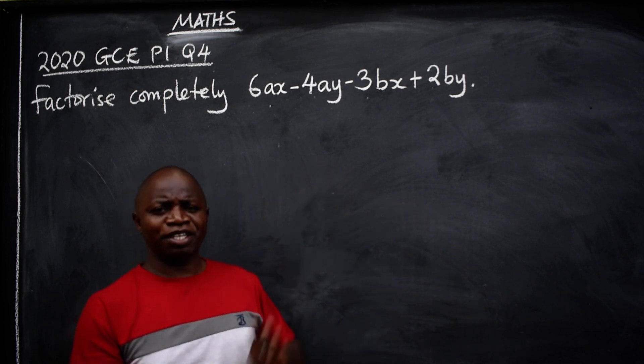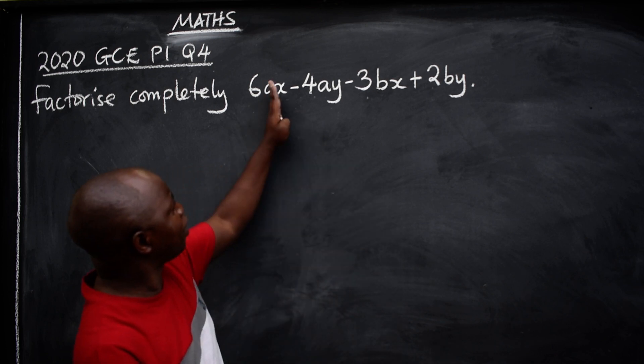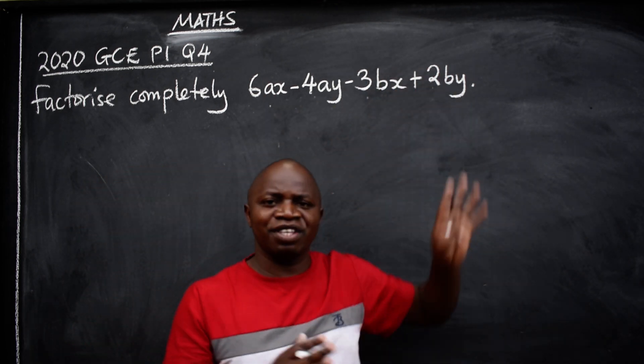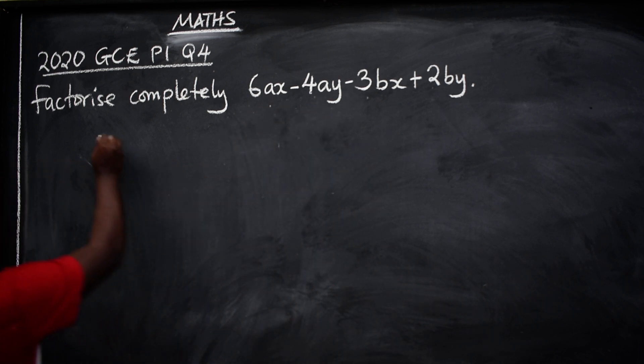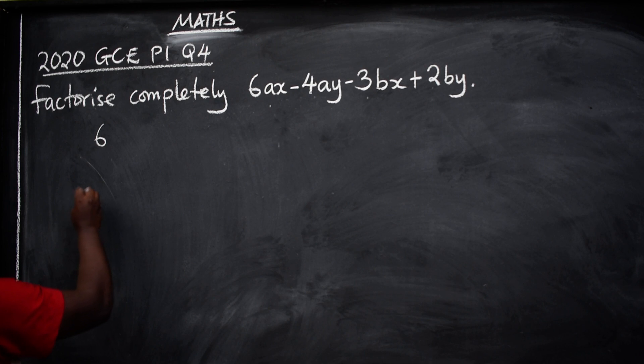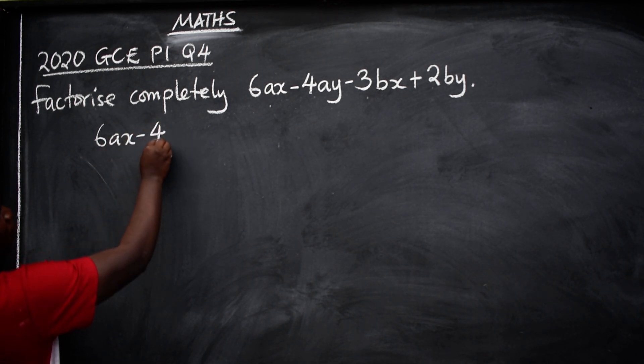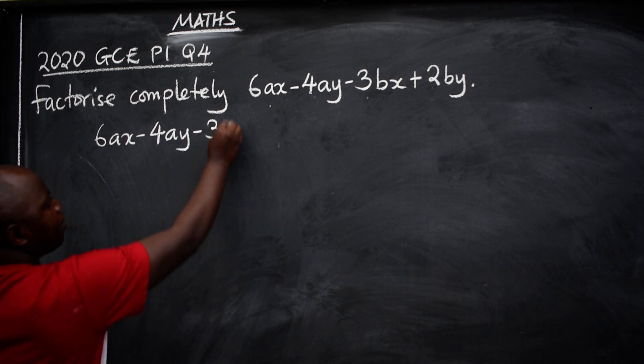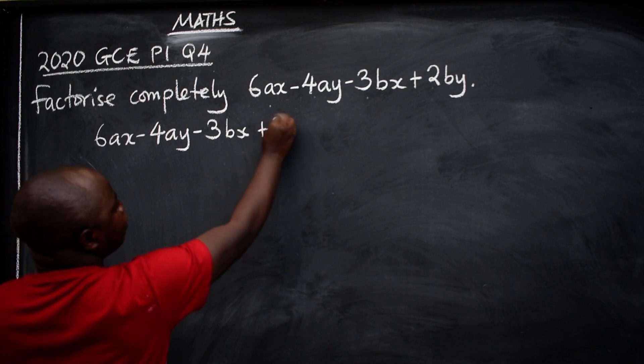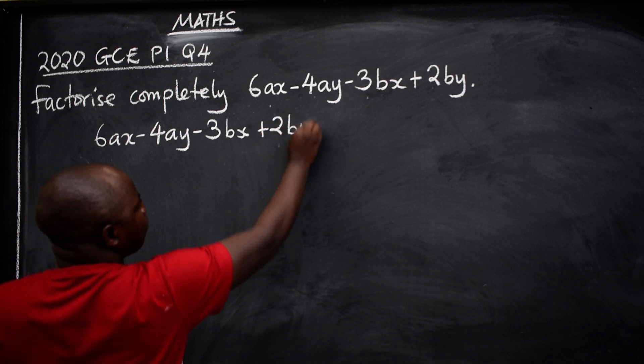Look at this. How many terms do we have? One, two, three, four. So this is grouping. Well, you will be able to copy the question the way it is. 6ax-4ay-3bx+2by.